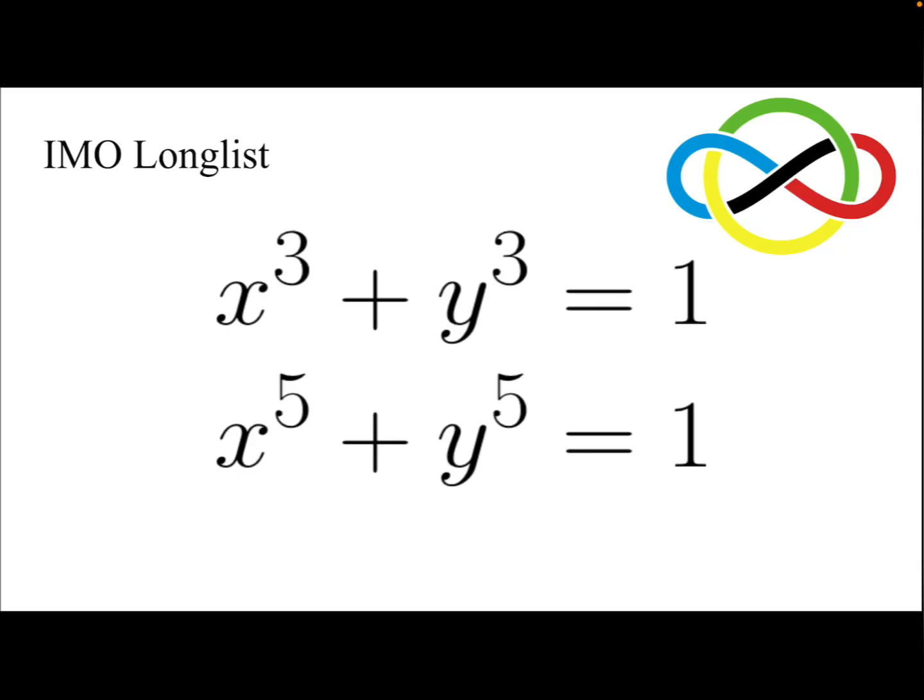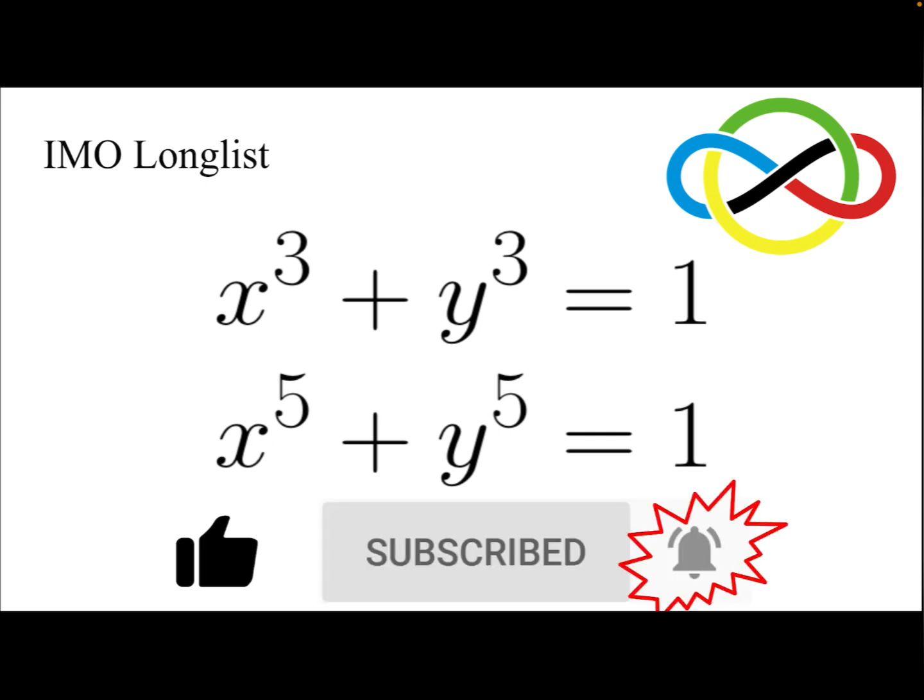In this video, we're going to solve a problem from the IMO long list. The system of equations: x cubed plus y cubed equals 1, and x to the power 5 plus y to the power 5 equals 1. Before we move on, don't forget to give a like, subscribe to my channel, and turn on post notifications.